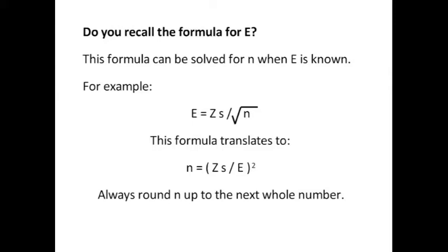Now I didn't go through all the algebraic manipulation of this for you, but this formula algebraically translates to n is equal to Z times s divided by the effect size, and all of that squared, and you always round n up to the next whole number.